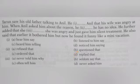He further added that she dashed she was angry and just gave him silent treatment. Four options: never told him why, seldom say that, often tell him, never asked him. The correct option is she never told him why she was angry. She never tells me why she is mad at me — so the correct option is she never told him why she was angry and just gave him silent treatment. He also said that earlier it bothered him but now he found it funny like a mini vacation.